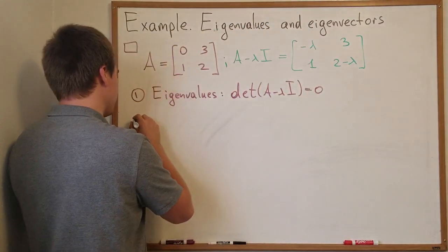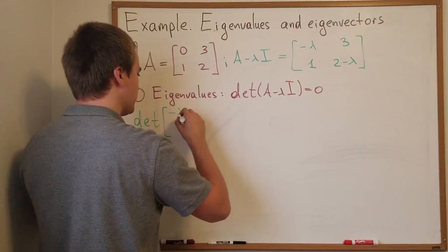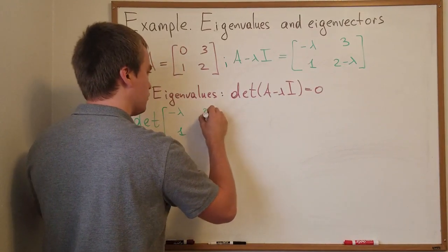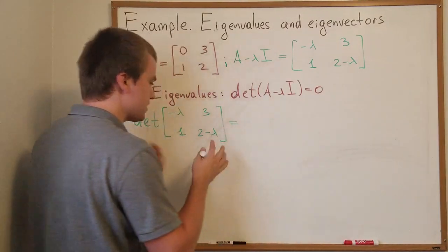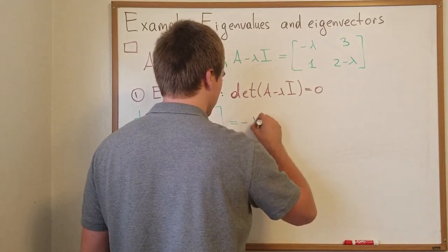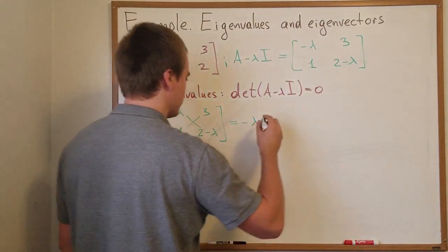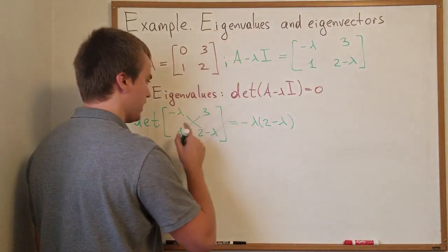So determinant of this matrix is going to be minus lambda, 1, 3, 2 minus lambda. And this is 2 by 2 determinant super easy so here I'm going to just do cross multiplication. So it's going to be minus lambda times 2 minus lambda minus 3.